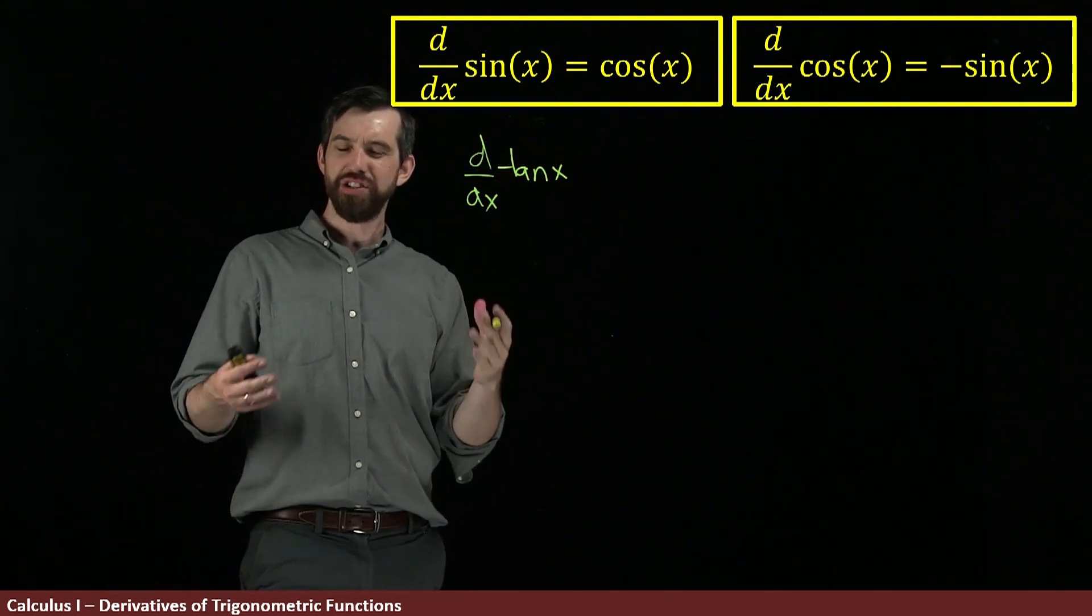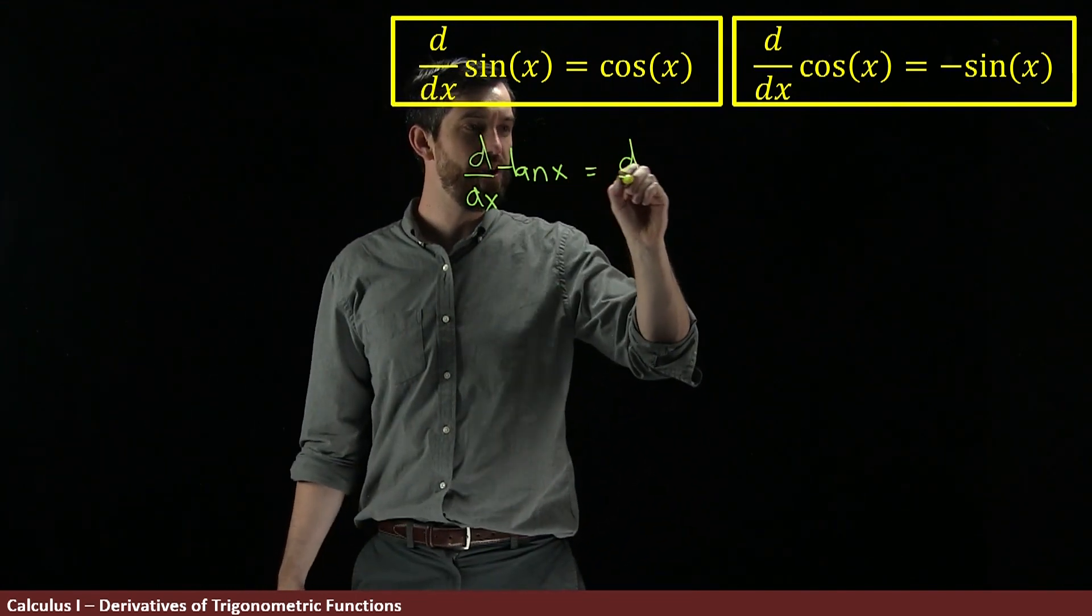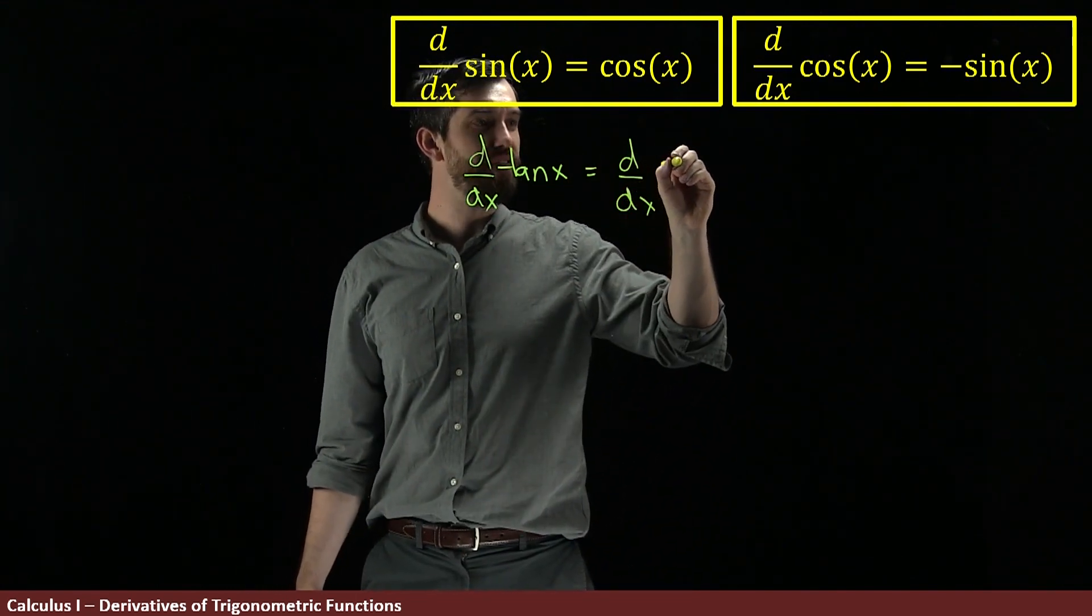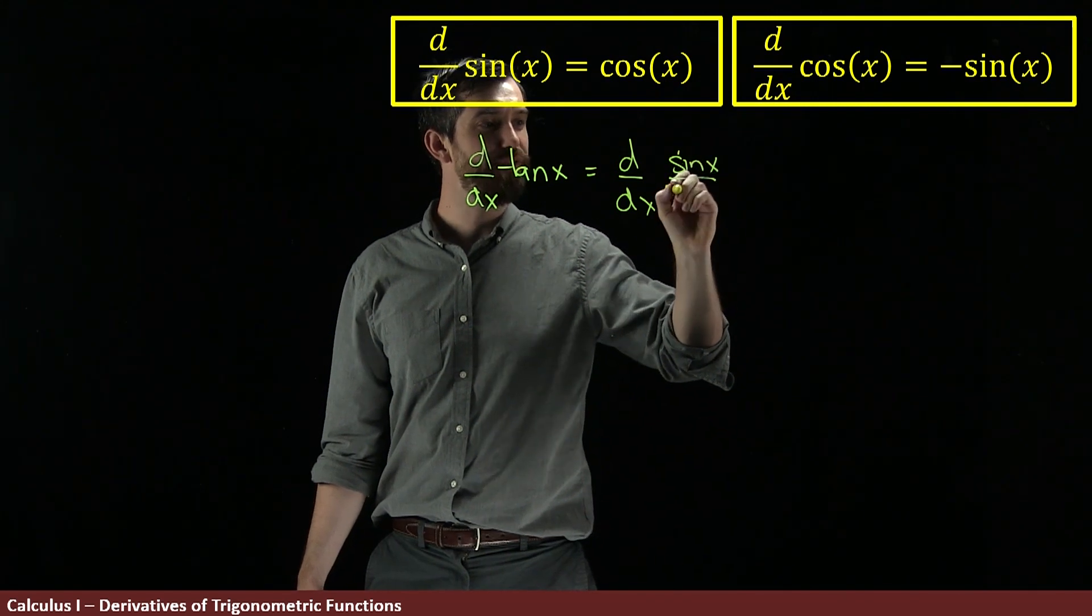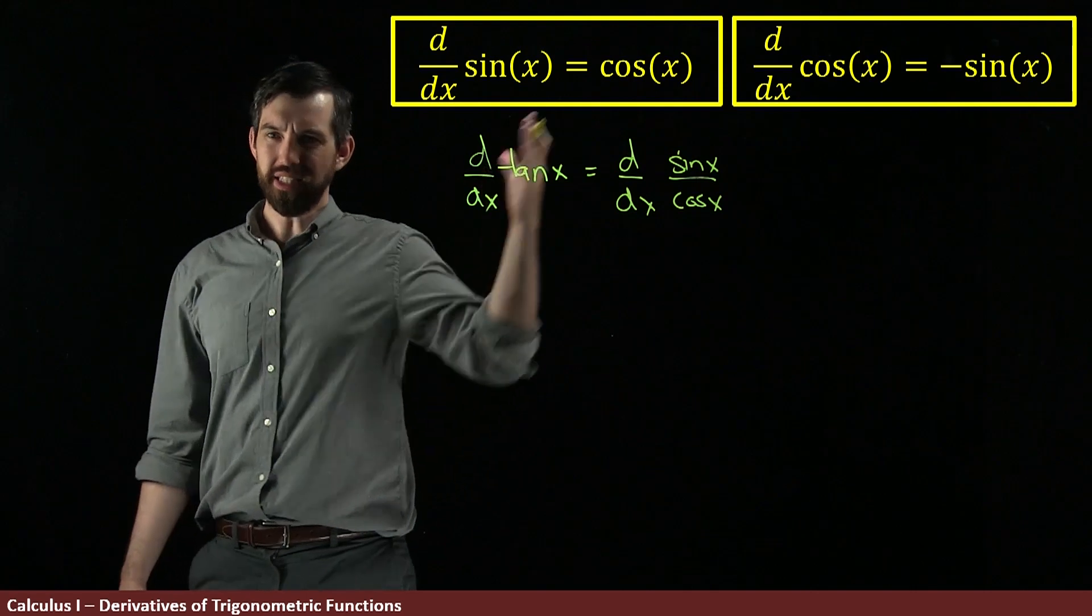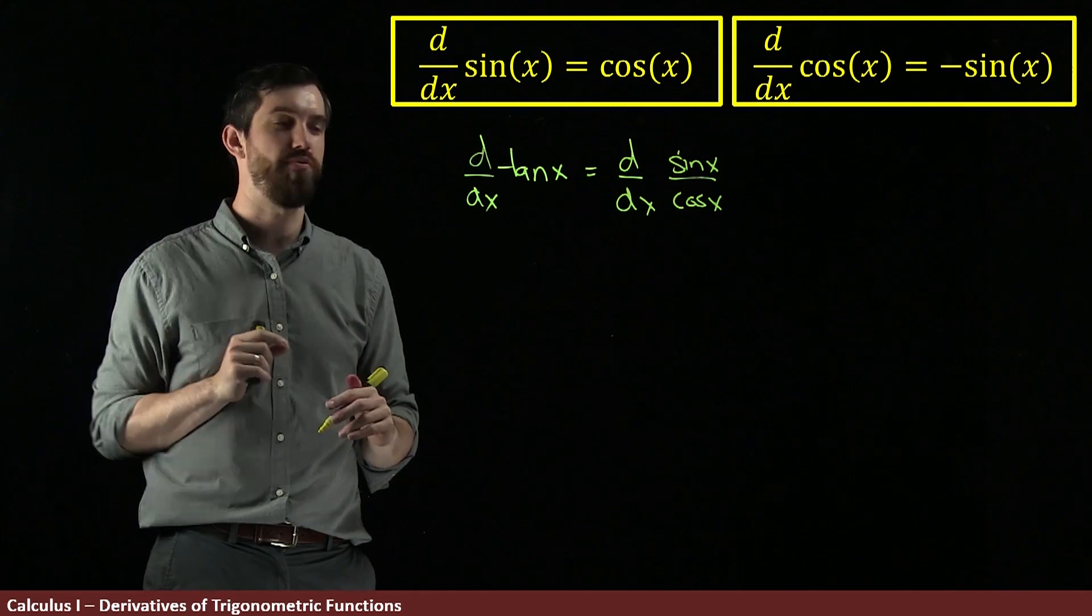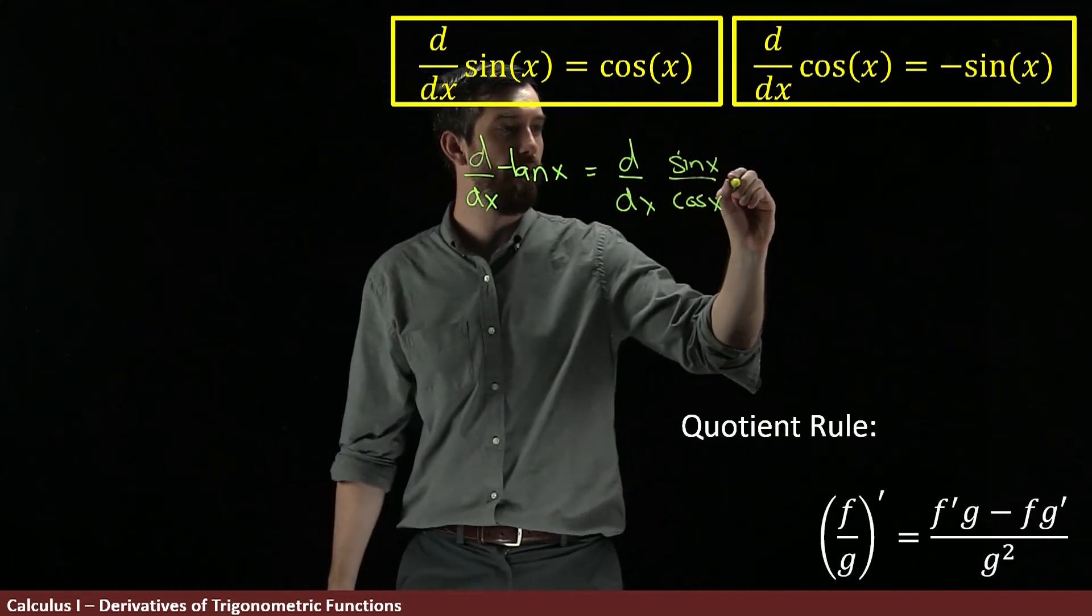So how do we do this one? I'm going to take the derivative of tangent of x. Now tangent is sine divided by cosine. So what I'm saying is I want to do the derivative of sin(x) divided by cos(x). And then this is a quotient of two functions, so I can use the quotient rule.